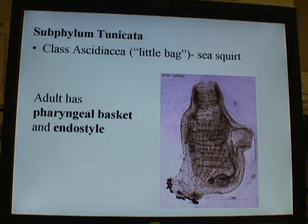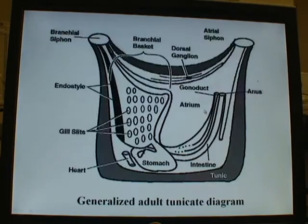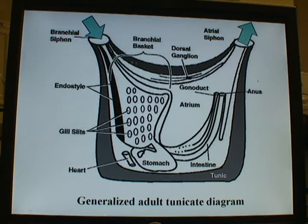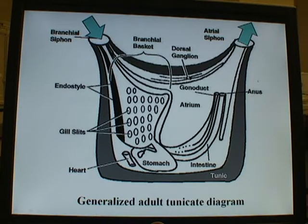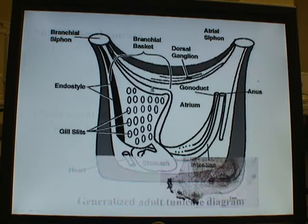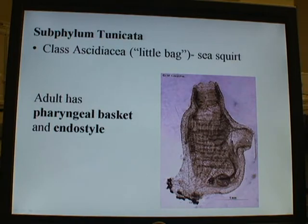This is what a solitary sea squirt looks like, and this is a cartoon diagram of its major parts. You have an incurrent siphon, an excurrent siphon, a pharyngeal basket, and an endostyle. Beyond the pharyngeal basket, you have a stomach, then the intestine, and here's the anus. The nervous system is very small — this dorsal ganglion is essentially a remnant of the nervous system I'll discuss in the larvae. Water comes in and goes out that way.